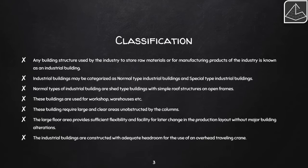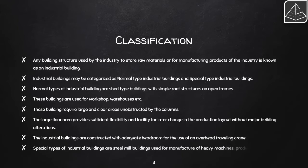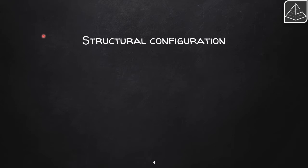Special type industrial buildings are steel mill buildings used for manufacturing heavy machines or production of power. These require different kinds of flooring, area arrangements, and different lighting and ventilation conditions, as they involve heavy machinery manufacturing or power production inside.